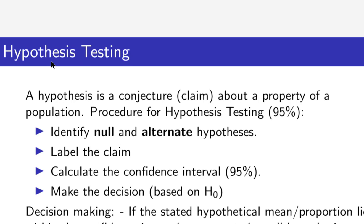We're going to take a look at some hypothesis testing. Hypothesis testing is an important technique in inferential statistics. We'll look at a bit of the theory and then do some examples. A hypothesis is a conjecture or a claim about a property of a population. For example, I could claim that 40% of Leaving Cert students smoke cigarettes — that would be a claim about the population of Leaving Cert students.